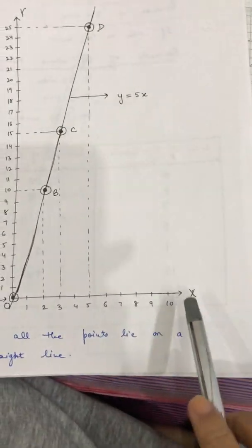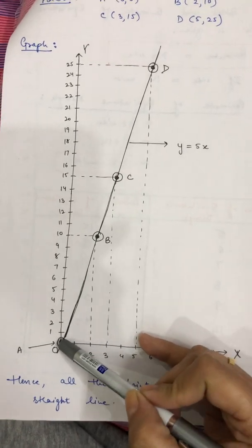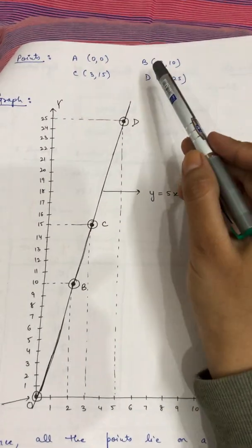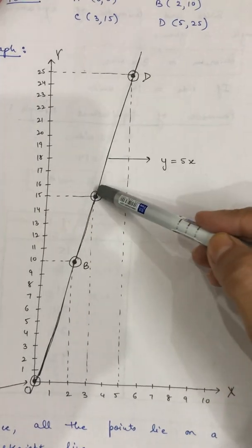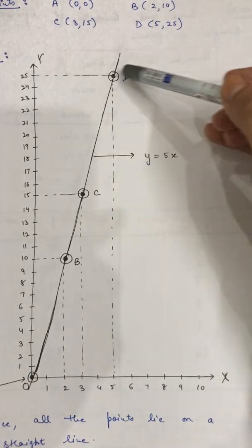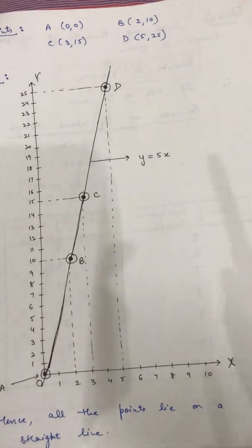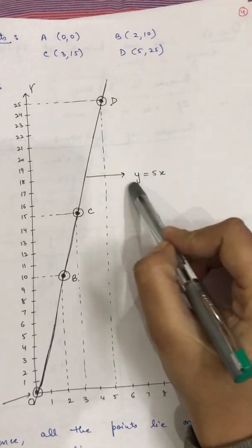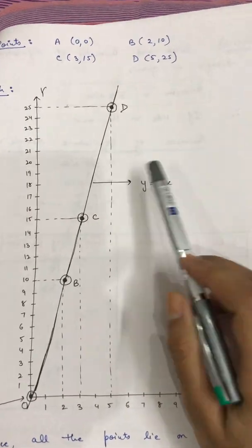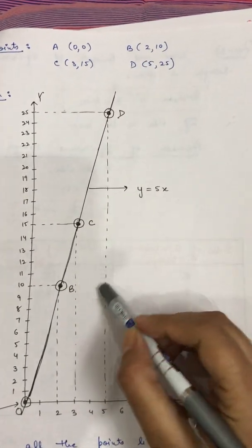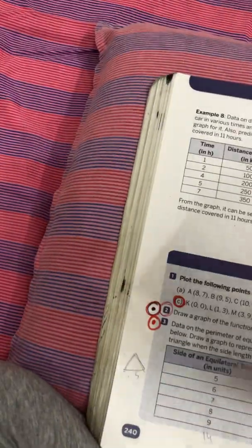On the graph: A is (0, 0) — zero on both axes. B is (2, 10). C is (3, 15). D is (5, 25). After joining all points you will see a straight line. You must write the equation y = 5x on the line, and also mention coordinates with the points. Hence all these points lie on a straight line.